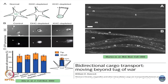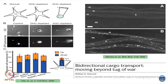On the other hand if you deplete kinesins, you would expect according to this tug-of-war picture that all the cargo is now in the cell body and there is nothing at the tips. So this is the control experiment, this is the experiment where there is no dynein, and this experiment where there are no kinesins. And you see that the distribution of cargo actually does not change much at all.